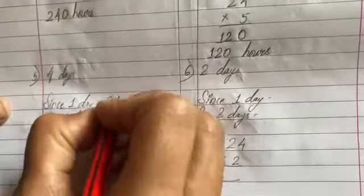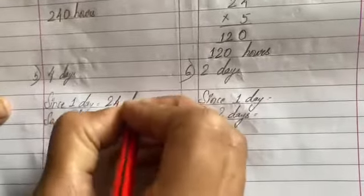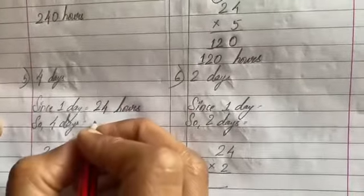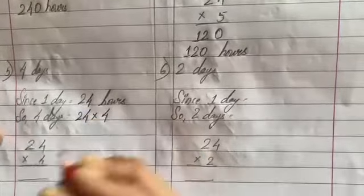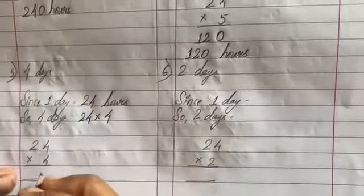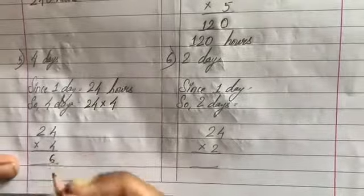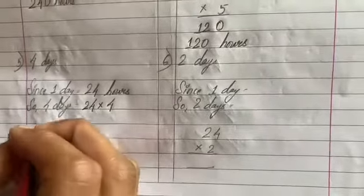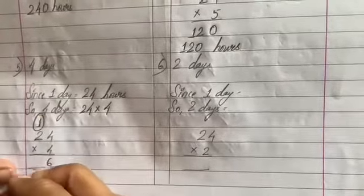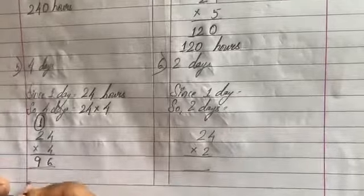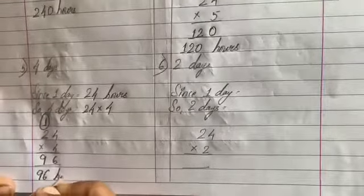Now 4 days. Since 1 day is 24 hours, 4 days will be 24 multiplied by 4. So 4 fours are 16, 6 stays down, 1 goes up. 4 twos are 8, plus 1 is 9. So the answer is 96 hours.